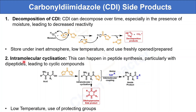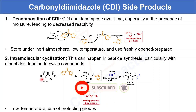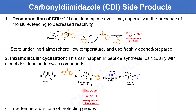The second side product of CDI reactions is intramolecular cyclization. This can happen in peptide synthesis, particularly with dipeptides, leading to cyclic compounds. For example, the amide coupling of an acid with an amine goes through an intermediate, but instead of forming the expected amide, it can form diketopiperazine as a side product. This is another major side product in CDI coupling reactions. We can avoid this by running the reaction at low temperature or using protecting groups on other reactive functional groups.